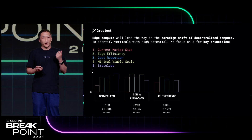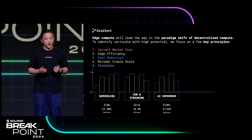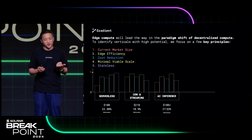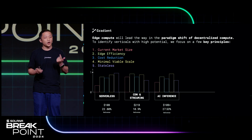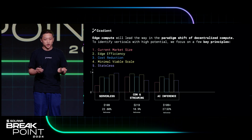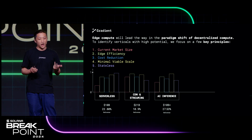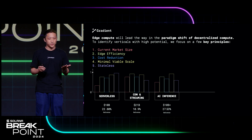We have established a framework to identify the verticals with very high potential in the space, guided by five core principles: market size, edge efficiency, cost reduction, minimum viable scale, and statelessness of the compute.